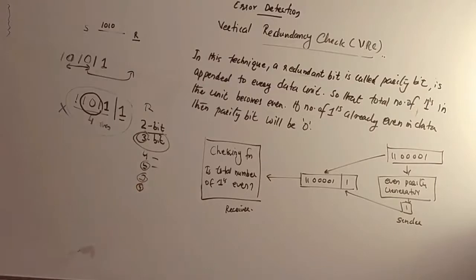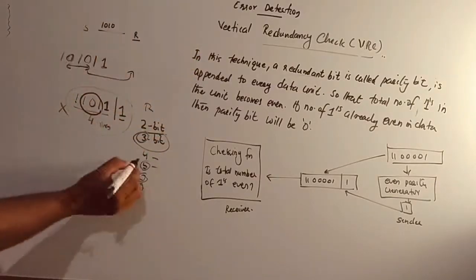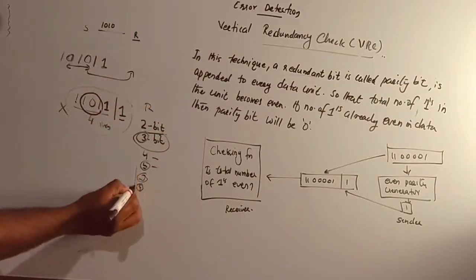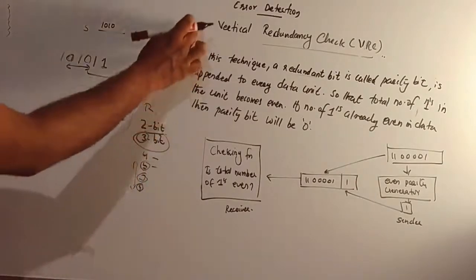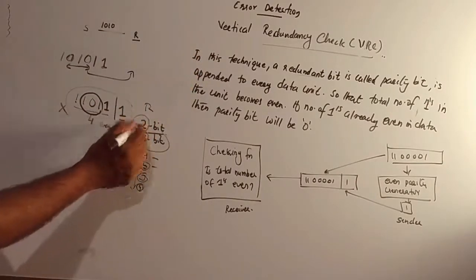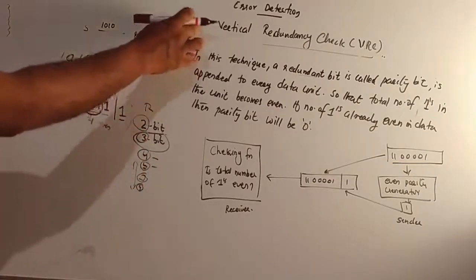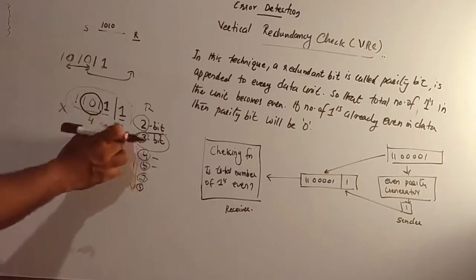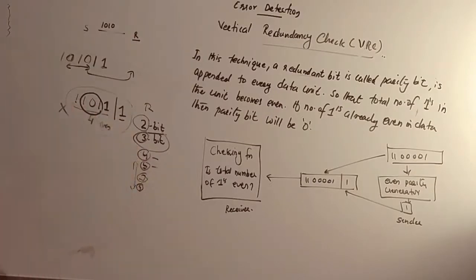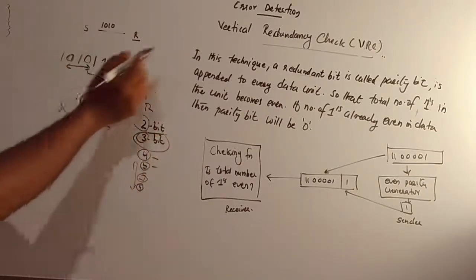VRC can detect automatic errors. But even number of errors — they are digital, meaning an even number of errors cannot be detected by VRC.